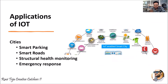Moving on to smart cities — another area where IoT is applied. This includes smart parking, smart roads, structural health monitoring, and emergency response. For example, if an accident occurs on a road in a city, high-definition cameras capture the incident.